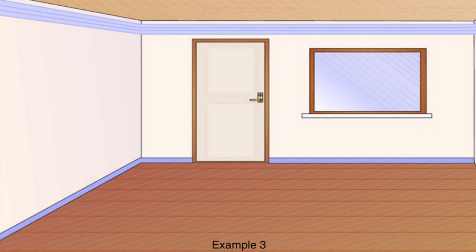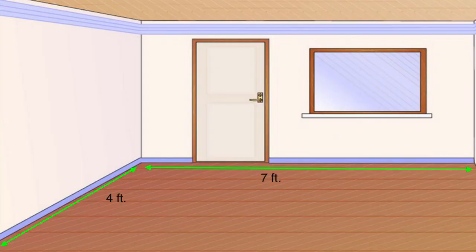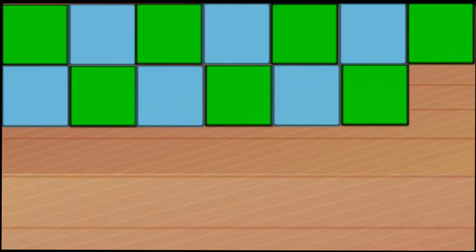My kids like to spend a lot of time in the playroom, and I want to put down foam tiles. The room is 4 feet by 7 feet, and each tile is 1 foot square. So how many tiles do I need? That would give me 4 groups of 7, which is 28. So 4 times 7 is 28. I need 28 tiles.